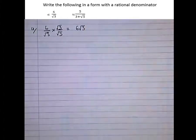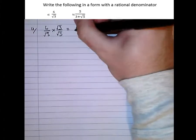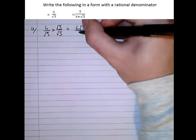So the top, 6 times root 3, is 6 root 3. And the bottom, root 3 times root 3, is 3.